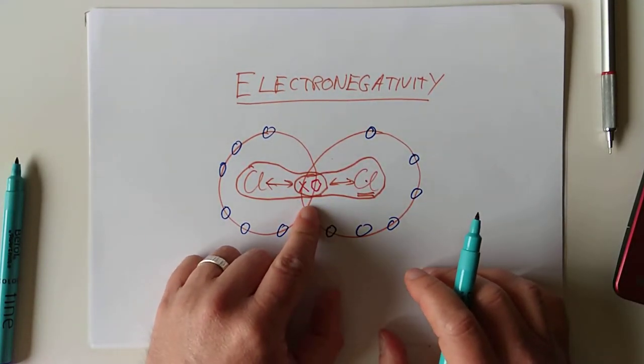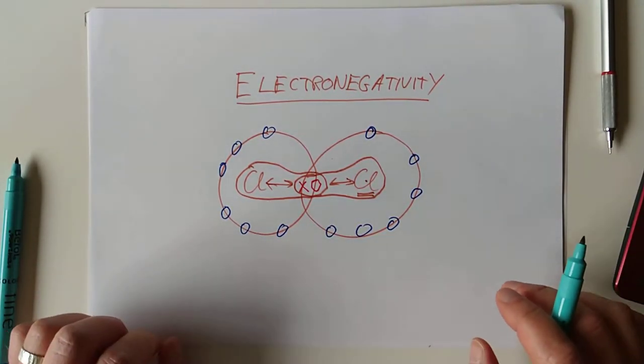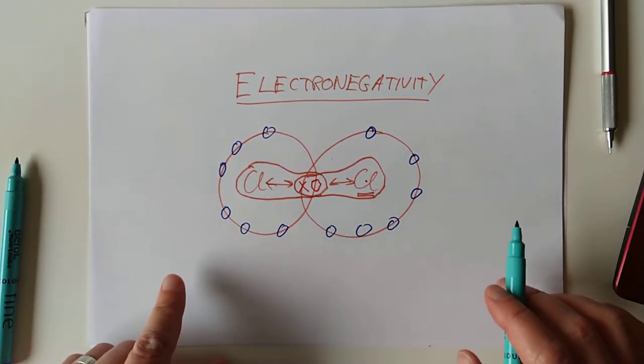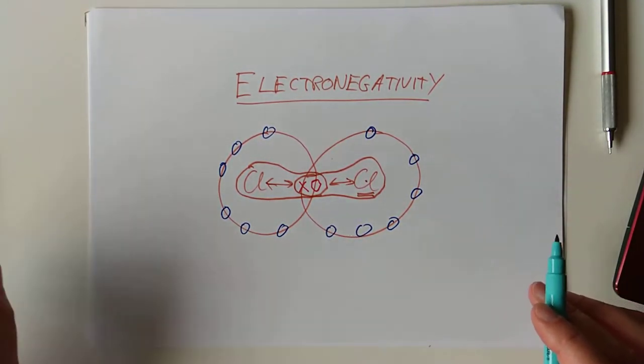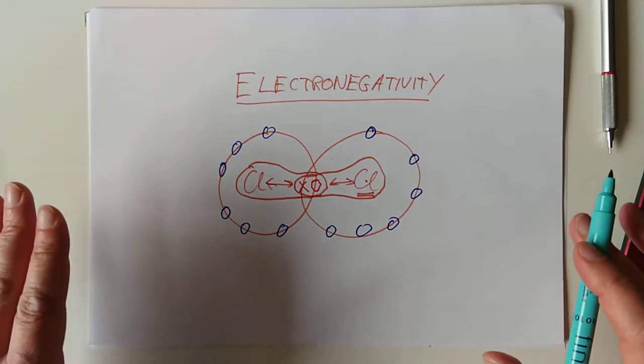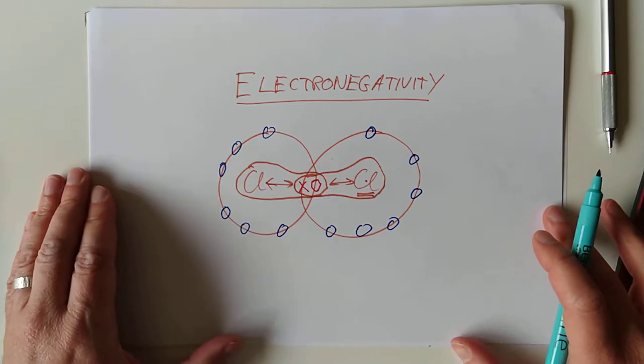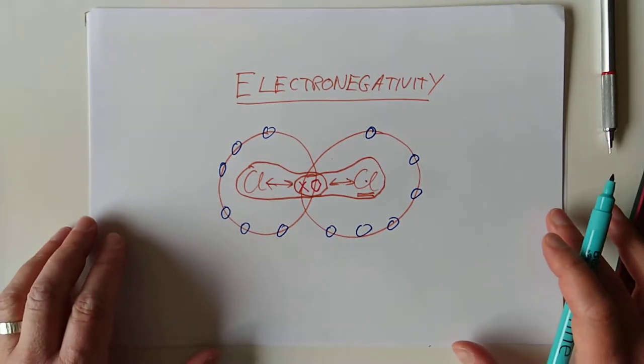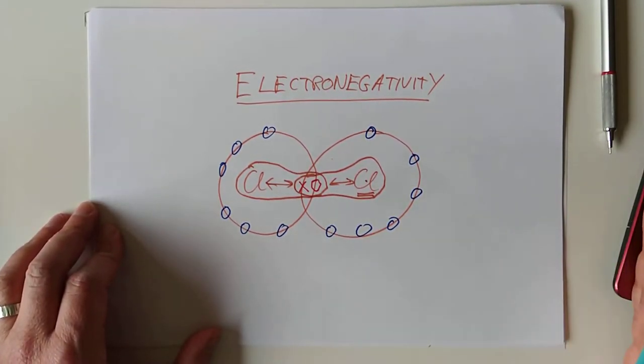And you are required to know the patterns in how it changes as you go from left to right and up and down the groups. At the moment, by the way, because we're just talking about elements, we haven't moved on really to compounds. We will be doing compounds. The reason that we're teaching it in this order is we teach you these patterns, these trends, and then we look at the bonding structure and elements, and then we look at compounds, and then it'll be the summer holidays.